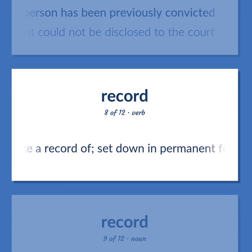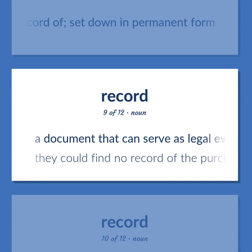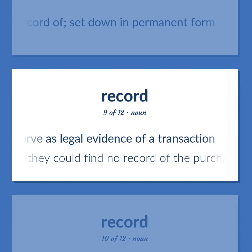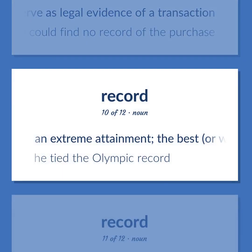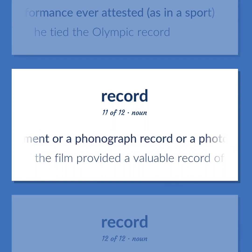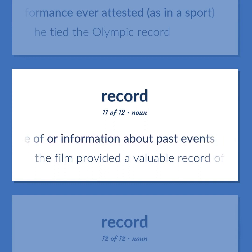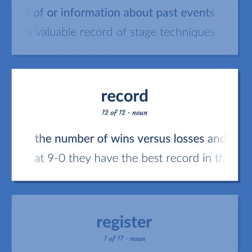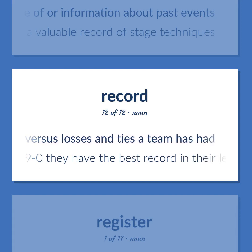Make a record of; set down in permanent form. A document that can serve as legal evidence of a transaction — they could find no record of the purchase. An extreme attainment; the best or worst performance ever attested, as in a sport — he tied the Olympic record. Anything, such as a document or a phonograph record or a photograph, providing permanent evidence of past events — the film provided a valuable record of stage techniques. The number of wins versus losses and ties a team has had — at 9-0 they have the best record in their league.